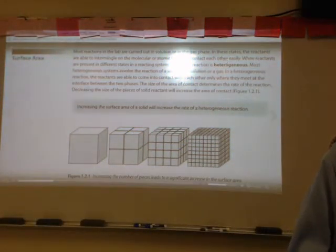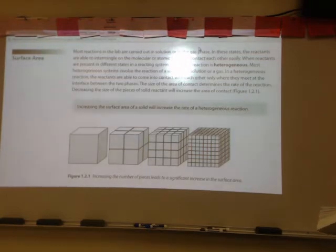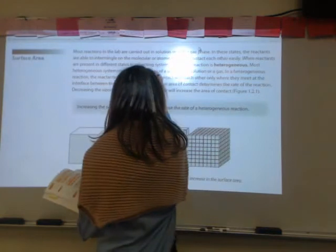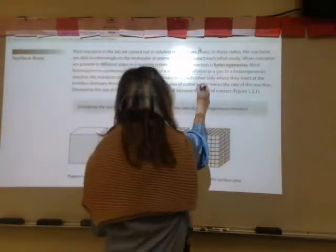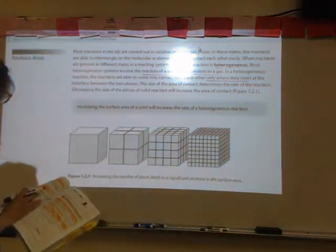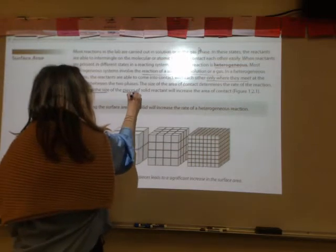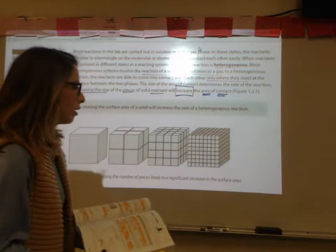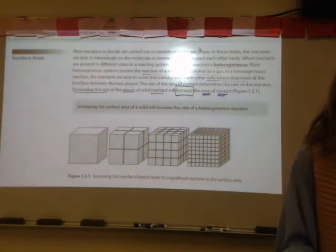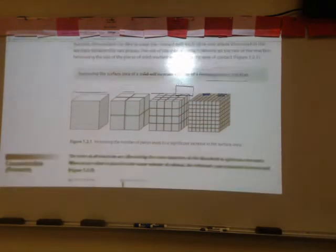When reactants are in the same state, the reaction is homogeneous. When they're in different states — solid, liquid, or gas — it's heterogeneous. Heterogeneous systems usually involve a solid reacting with a solution or gas. Reactants only come into contact where the two phases meet. Decreasing the size of solid pieces increases the contact area between phases. So increasing the surface area of a solid increases the rate of a heterogeneous reaction. The figure shows pieces being cut into smaller and smaller sizes, increasing surface area from left to right.